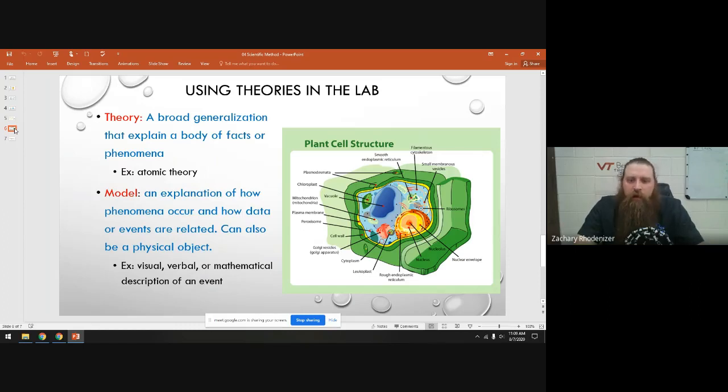A theory defined is just a broad generalization that's going to explain a body of facts or phenomena. In other words, we have not looked at every single living thing, but cell theory tells us that all living things are made of cells, and every time we look at a living thing under the microscope we find cells, and so we accept the theory.